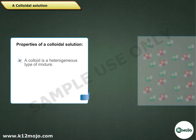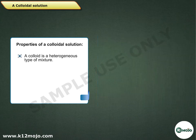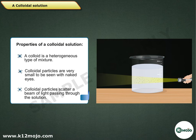Properties of a colloidal solution. A colloid is a heterogeneous type of mixture. Colloidal particles are very small to be seen with naked eyes. Colloidal particles scatter a beam of light passing through the solution.